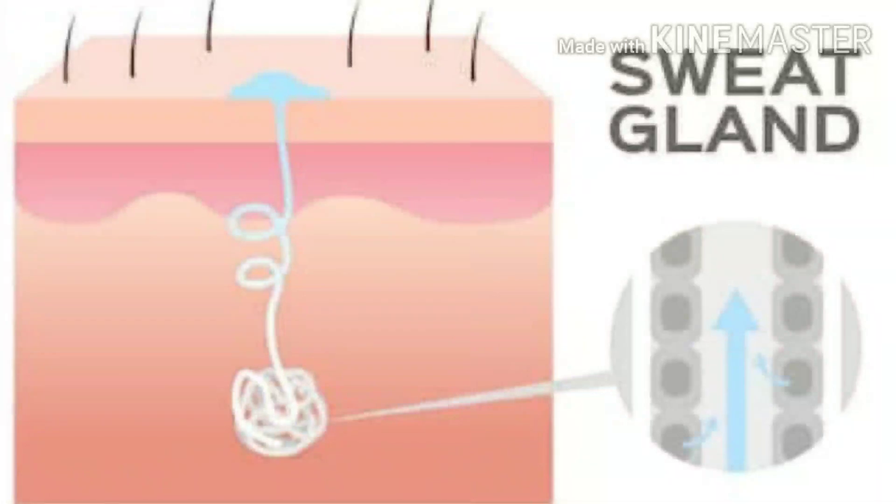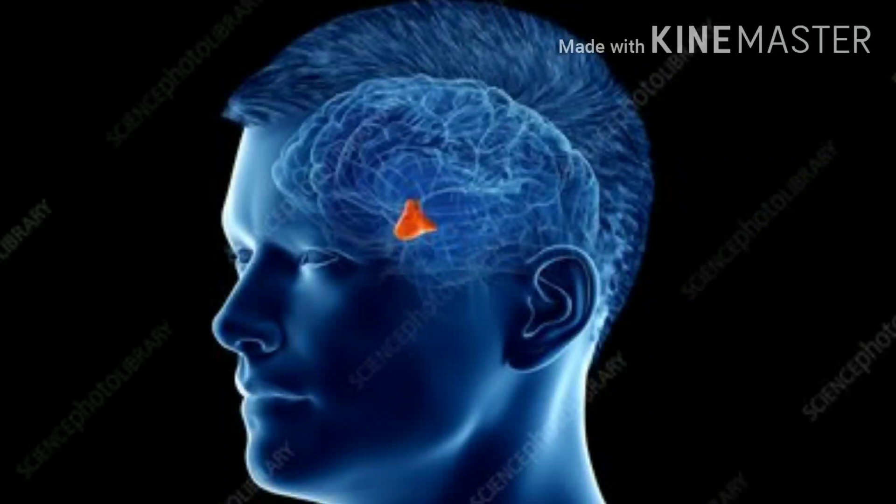Our skin has sweat glands, and these sweat glands produce water in our body. They are under control. In our brain, we have a hypothalamus which controls the sweat glands in our body. The sweat glands are also located under the skin and are under the control of the hypothalamus.